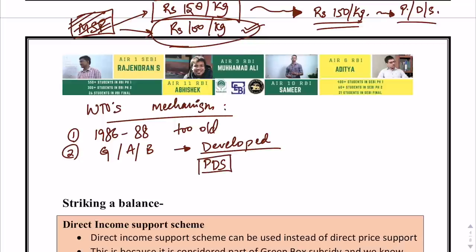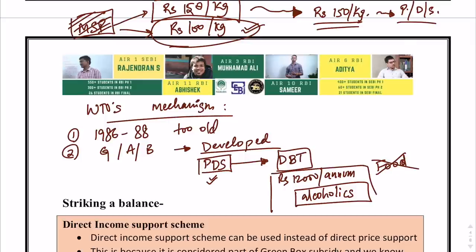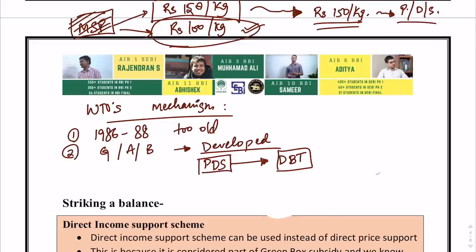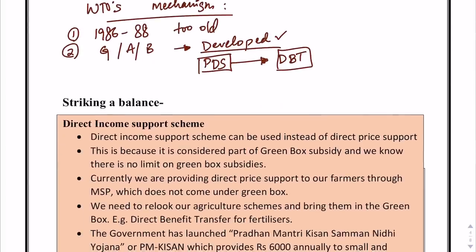For example, the Public Distribution System ensures that every poor family has food on the table. If you replace PDS with a direct benefit transfer of, say, Rs. 12,000 per annum, poor families with alcoholic members might spend all this money on alcohol and there would be no food on the table. PDS ensures that this misuse cannot happen and there is always food available for poor families. These are the kinds of complications that WTO does not understand, because developed countries have not faced such problems — they don't grasp the complexities that developing countries like India with a huge population are facing.